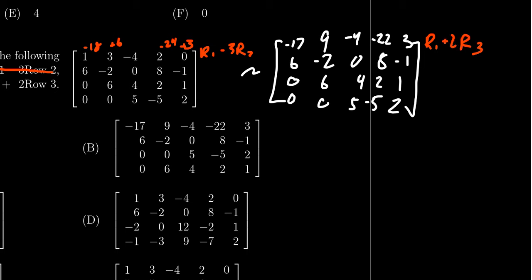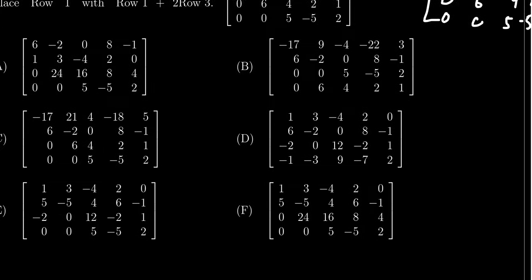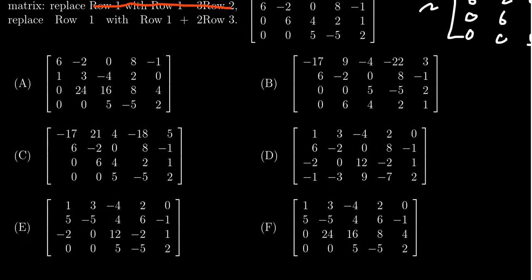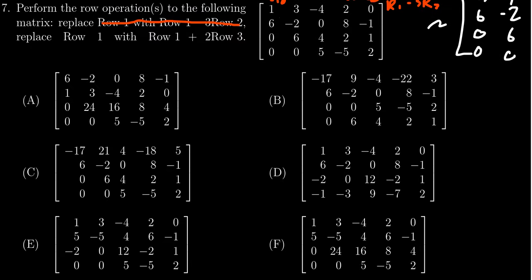Now, one thing I want to mention right here is that because of this, we didn't change the second row, the third row, the fourth row whatsoever. So in terms of the possibilities here, I'm going to be looking for things that have the correct second row, that 6, negative 2, 0, 8, and negative 1.